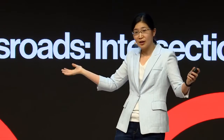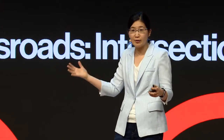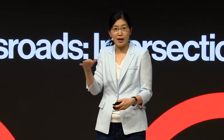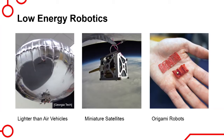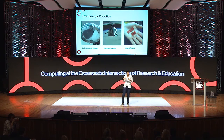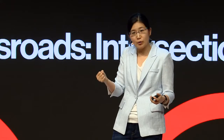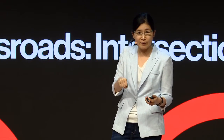This chip enables a whole class of low-energy robotics that take less than a watt to actuate. For example, lighter-than-air vehicles for air quality monitoring, miniature satellites for deep space exploration, or origami and foldable robots for medical applications. All of these robots take very little energy to interact with the real world, so it's really important that the computation is also very low power.